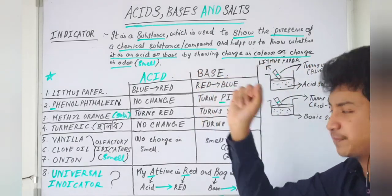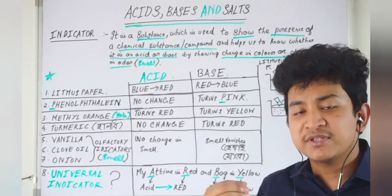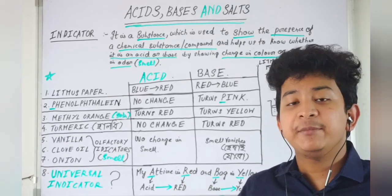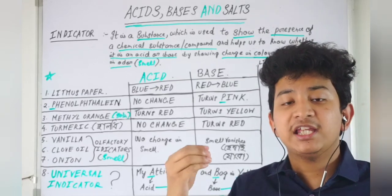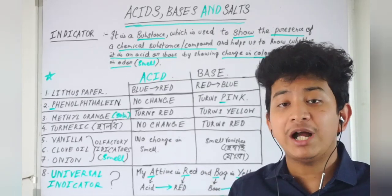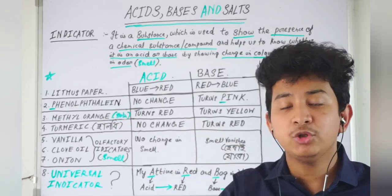An indicator helps us identify if a chemical substance or compound is either acid or base. It helps by changing its color or its smell. Smell means odor. Now we have types of indicators.